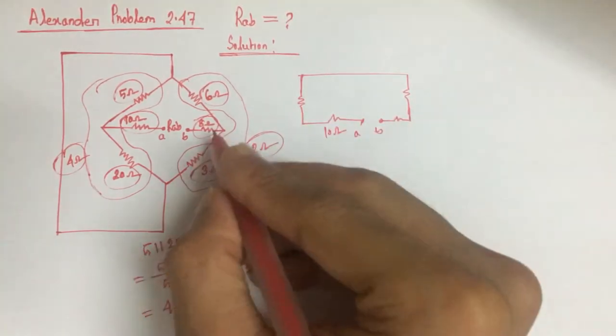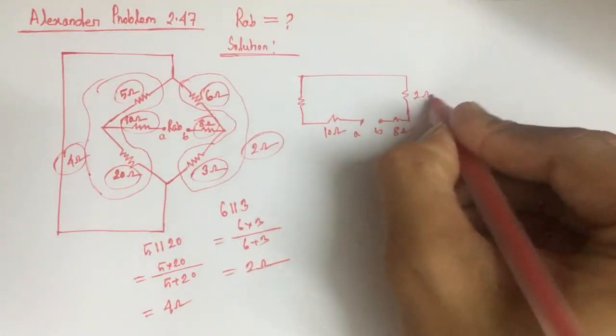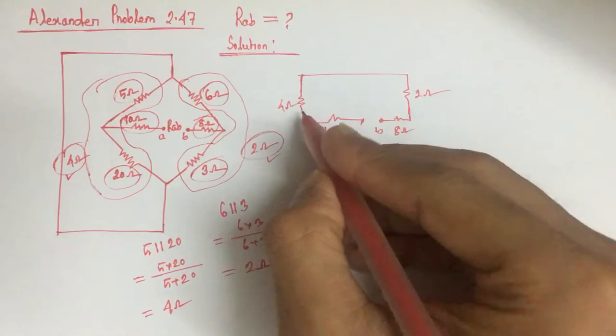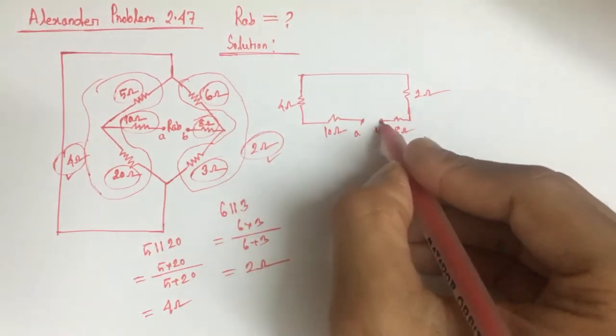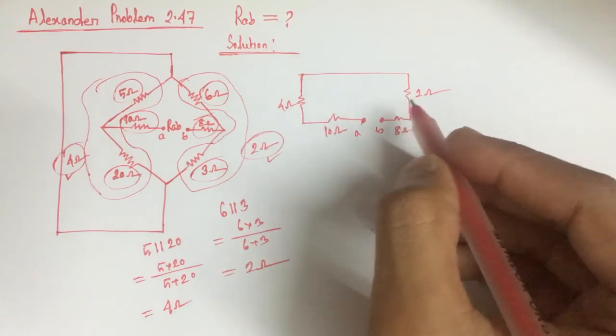this is 8 ohm, and this is the equivalent 2 ohm resistance, and this is the equivalent 4 ohm resistance. All these 4 resistances are in series. So these 4 resistances will be added directly.